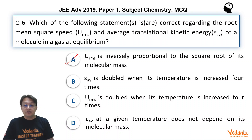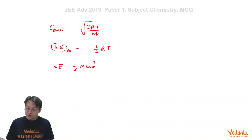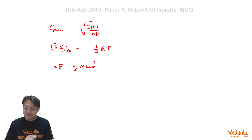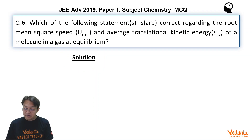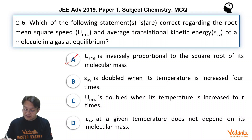The second option is: E-average is doubled when the temperature is increased four times. Since E-average is directly proportional to temperature, if you double the temperature, the kinetic energy will be doubled. Here the temperature is increased four times, so E-average would be quadrupled, not doubled. This must be a wrong option.